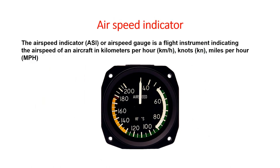The airspeed indicator, or airspeed gauge, is a flight instrument indicating the airspeed of an aircraft in kilometers per hour, knots, or miles per hour.